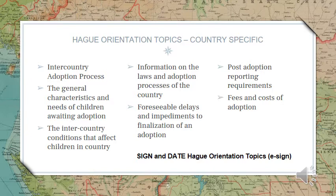It is important to note that our agency has no control over the rate at which referrals are made by our partners in Taiwan. While many children with special needs are available, agencies also have no control over the children that are made available for adoption. Your openness to gender, age range, and various medical conditions will affect the length of time you may wait for a match. The more open your family's criteria for a child is, the more quickly you will be matched compared to families who request a very young female with minor special needs.